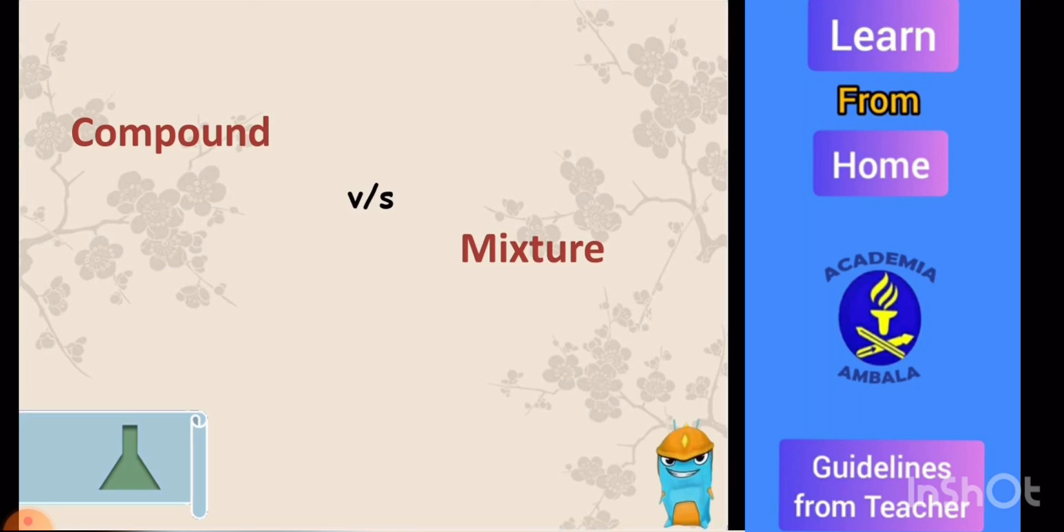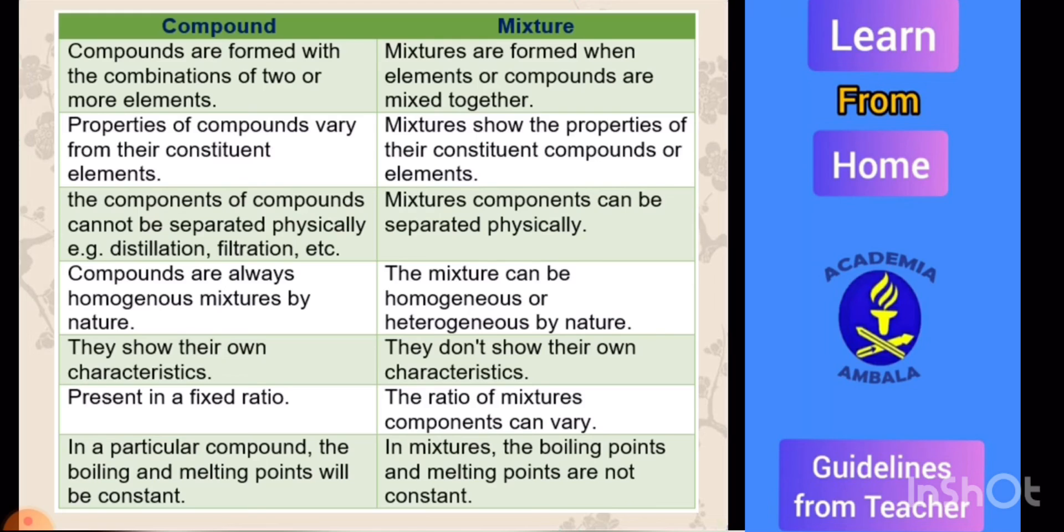Next is difference between compound versus mixture. Compounds are formed with the combinations of two or more elements by chemical reaction. Mixtures are formed when elements or compounds are mixed together physically. Properties of compounds vary from their constituent elements. Mixtures show the properties of their components. The components of compounds cannot be separated by any physical method like distillation, filtration, etc. Compounds are always homogeneous. Mixtures can be homogeneous or heterogeneous by nature.